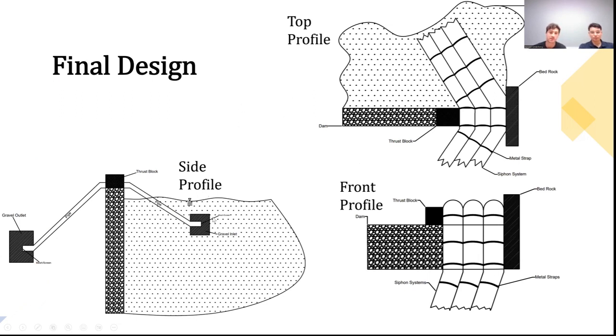We are going to start a siphon system in the Lake Basin, run it over top of the dam, and have it exit into the Mill River downstream. Our system is going to consist of three individual siphons, all with a total length of 340 feet, made of PVC pipe with 12-inch diameters, and it will be secured to the bedrock located next to the dam using both thrust blocks as well as metal straps.